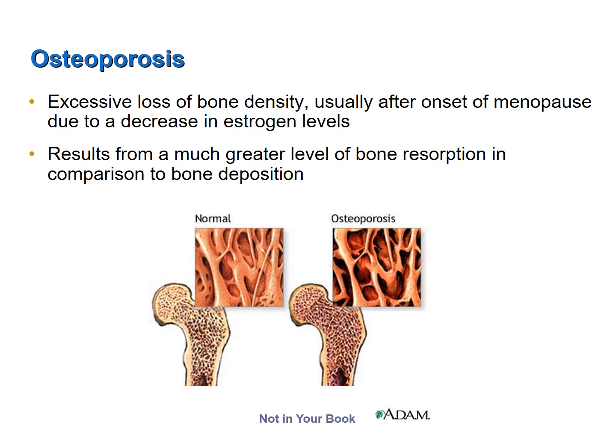Osteoporosis is a disease of adults due to excessive loss of bone density. It usually occurs after menopause in women due to a drop in estrogen levels, although about 10% of osteoporosis victims are men. Osteoporosis literally means porous bone, because excessive bone resorption over time leads to a loss of bone density, particularly in spongy bone, resulting in abnormally large spaces in the spongy bone. The reduction in bone density makes the bones quite fragile and subject to fracture just from normal activities.